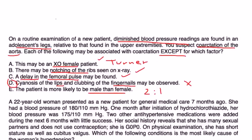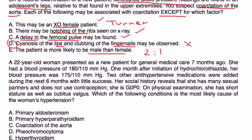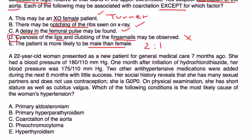Next question: A 22-year-old woman presented as a new patient for general medical care seven months ago. She had a blood pressure of 180 over 110. One month after initiation of hydrochlorothiazide her blood pressure was 175 over 110. Two other antihypertensive medications were added during the next six months with little success. Social history reveals that she has had many sexual partners and does not use contraception, she is G0P0. On physical exam she has short stature as well as cubitus valgus. Which of the following conditions is most likely cause of the woman's hypertension?